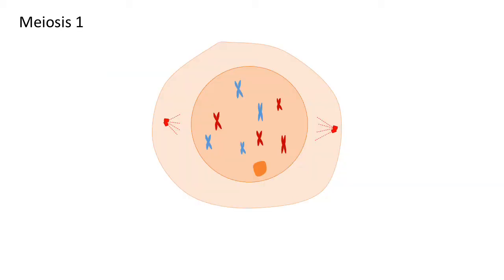In meiosis one, there are some events that will happen during prophase one you should recognize. The nuclear envelope disintegrates, the nucleolus disappears, and in our example centrioles have migrated to the poles and spindle fibers are starting to be produced.